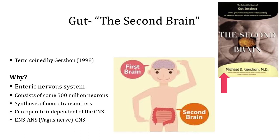The nervous system of the gastrointestinal system, called as the enteric nervous system, can independently regulate intestinal digestive and absorptive functions. The enteric nervous system contains around 500 million neurons. These neurons can synthesize neurotransmitters. And also because the enteric nervous system has a privileged access to the brain through the vagus nerve. For all these reasons, our enteric nervous system is called as the second brain.